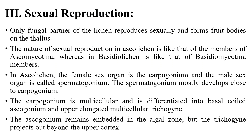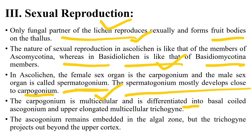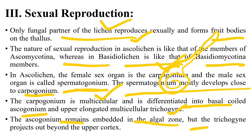In sexual reproduction, only the fungal partner takes part. In ascolichens, reproduction follows the pattern of Ascomycotina; in basidiolichens, that of Basidiomycotina. In ascolichens, the female sex organ is the carpogonium and the male sex organ is the spermatogonium. The carpogonium is multicellular and differentiated into a coiled ascogonium and an elongated trichogyne. The ascogonium remains embedded in the algal zone, but the trichogyne projects out beyond the upper cortex.